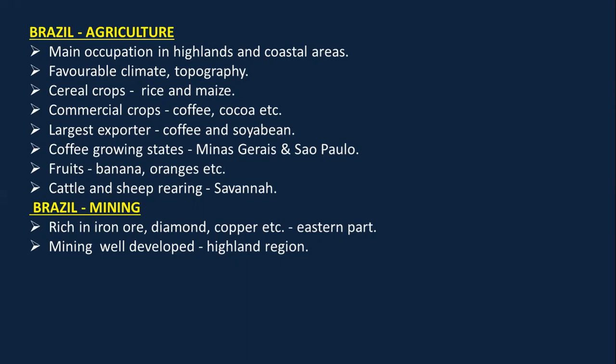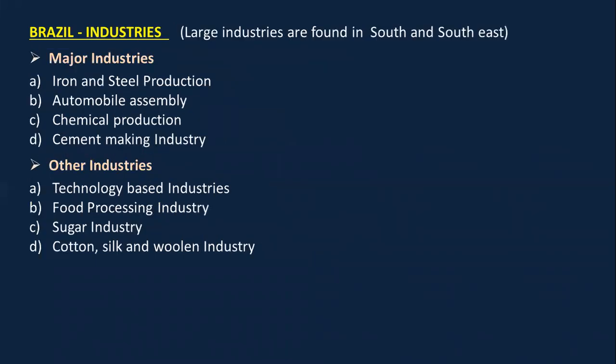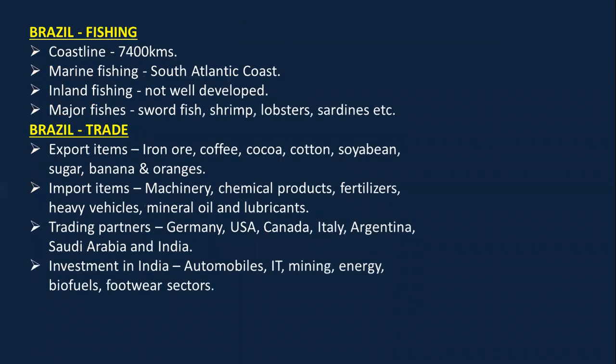Mining in Brazil is done for iron ore, diamond, and copper in the eastern part — mining is very well developed in the highland region. The major industries in Brazil are iron and steel, automobile, chemical, and cement-making industries. Other industries include technology-based industries, food processing, sugar, cotton, silk, and woolen industries.